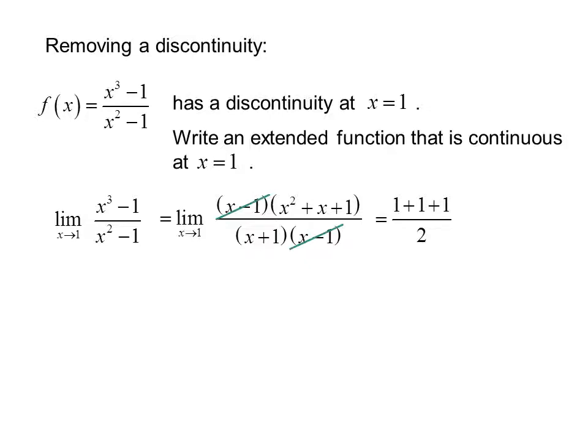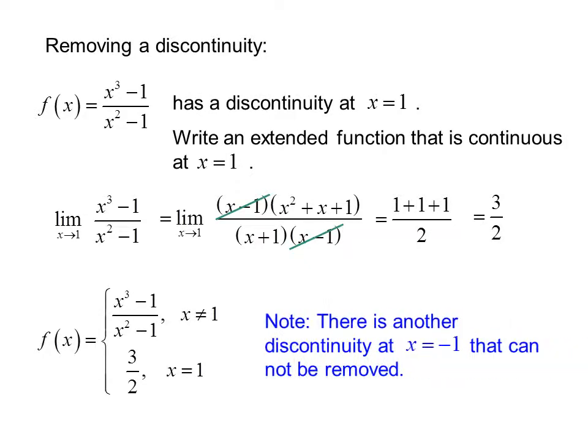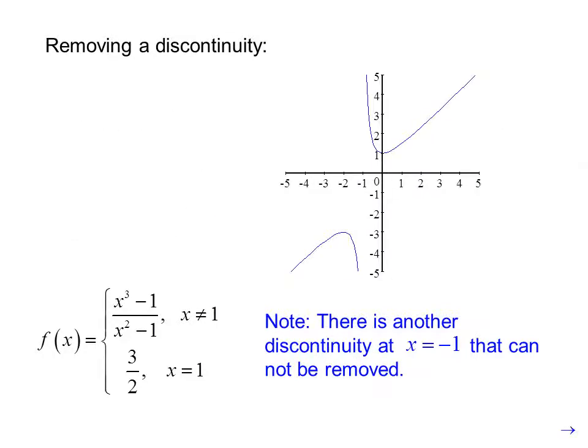Now we can evaluate the function and we get a value of 3 halves. So a y value of 3 halves would fill the hole. So our extended function is f of x equals x cubed minus 1 over x squared minus 1 when x is not equal to 1, and 3 halves when x is equal to 1. Note there is another discontinuity at x equals negative 1 that cannot be removed. The graph looks like this.